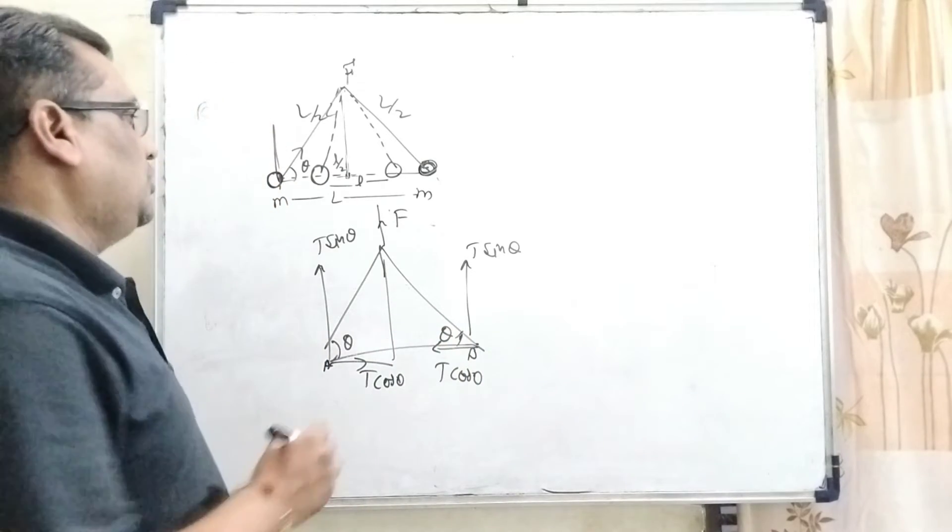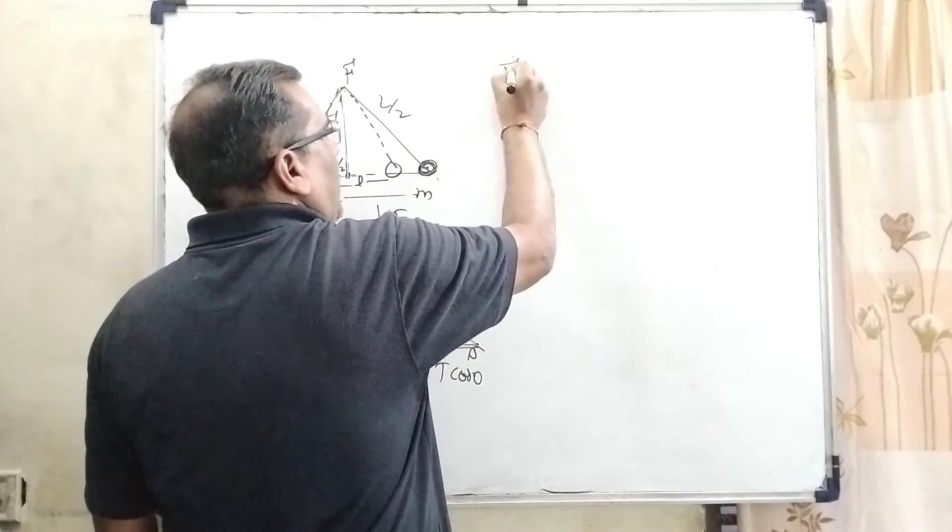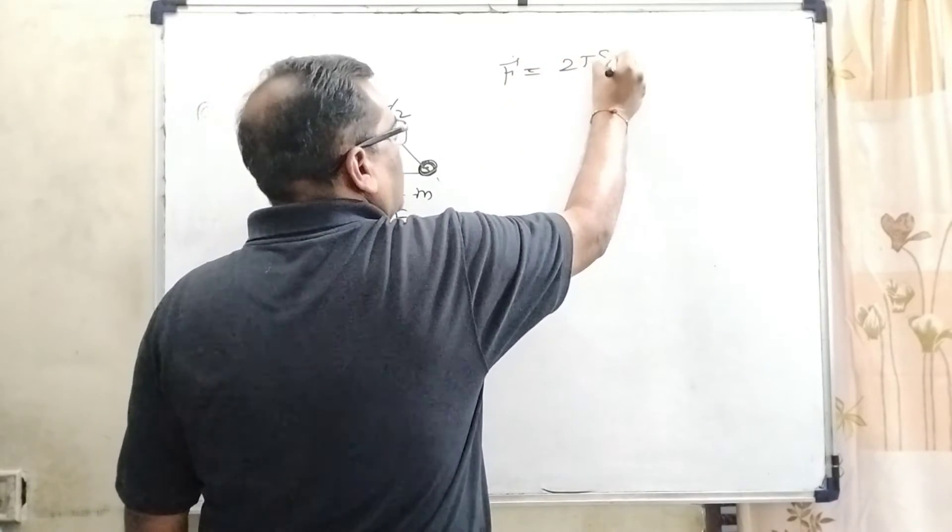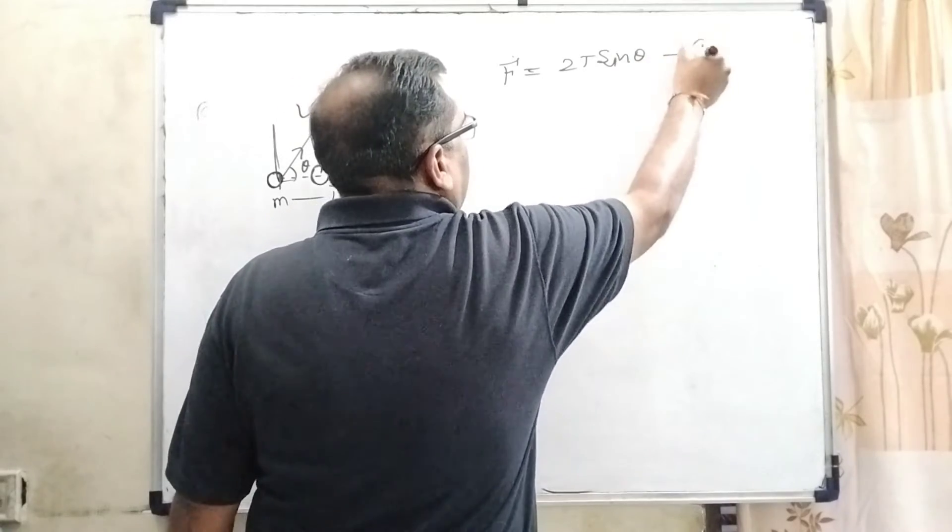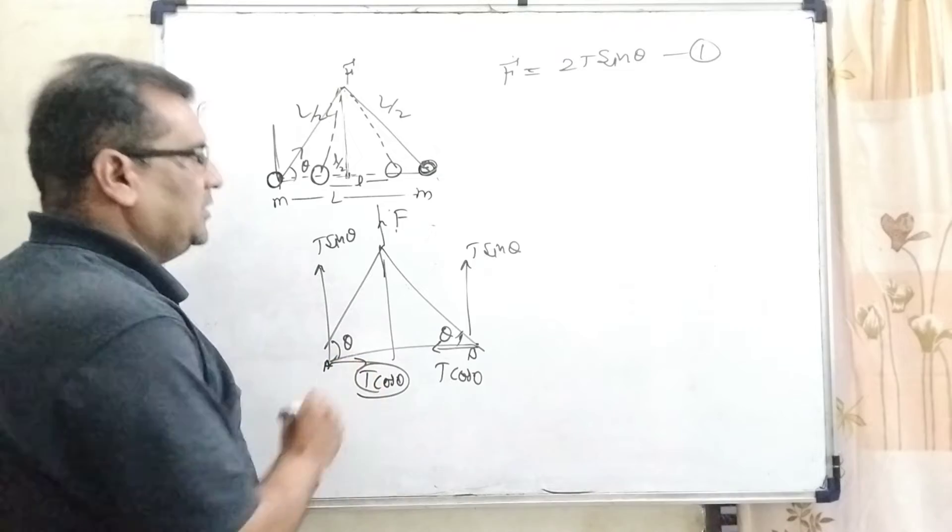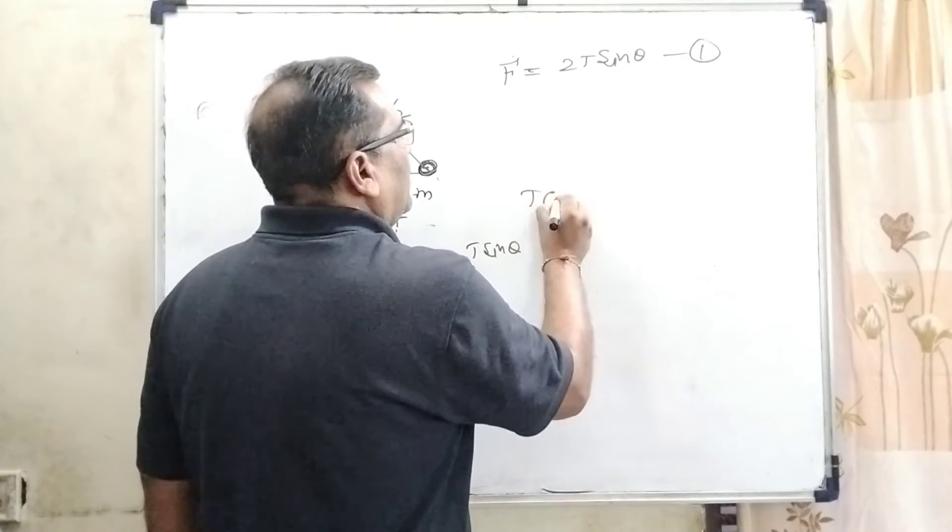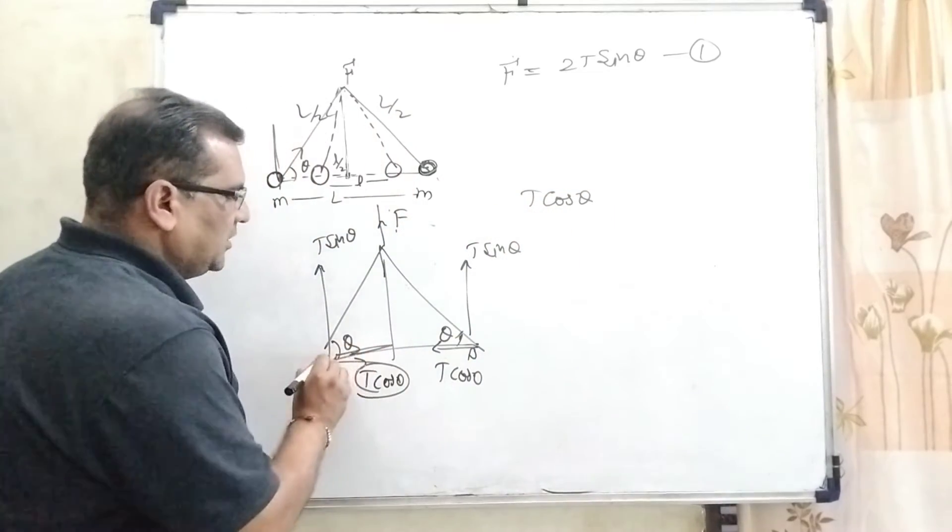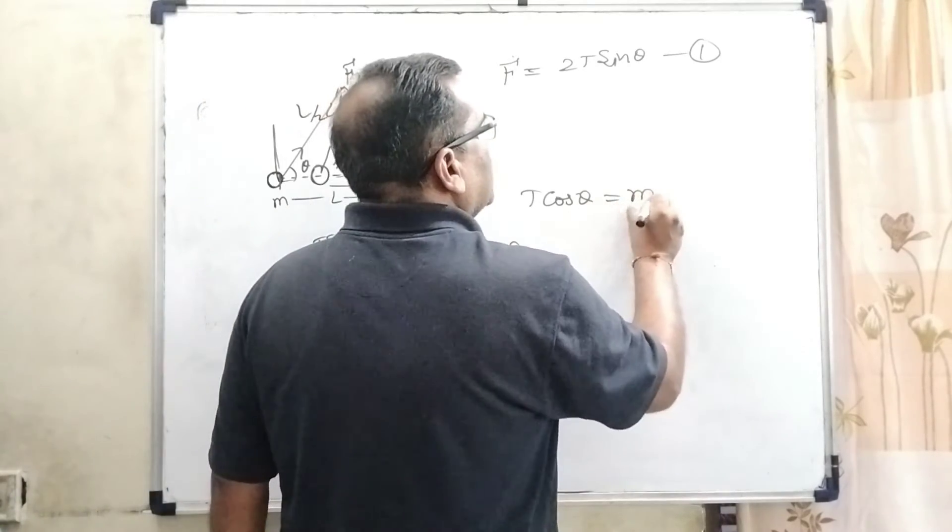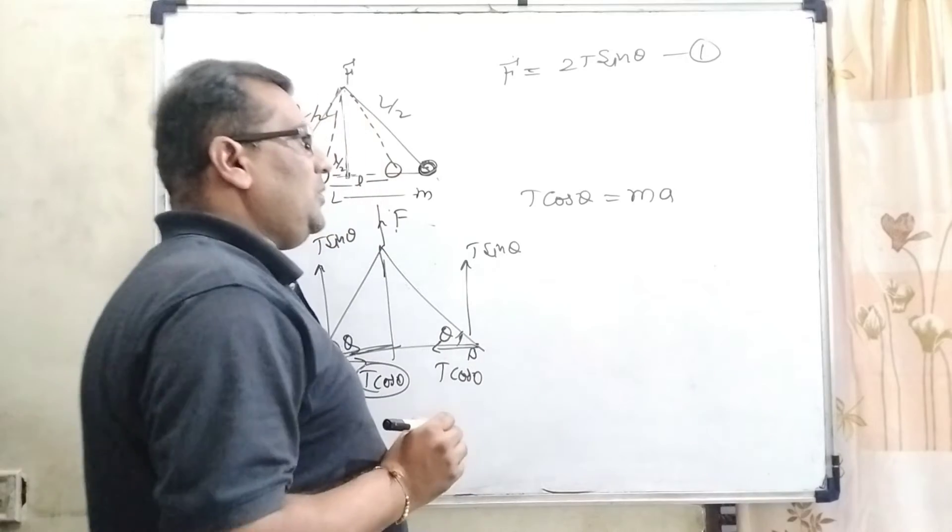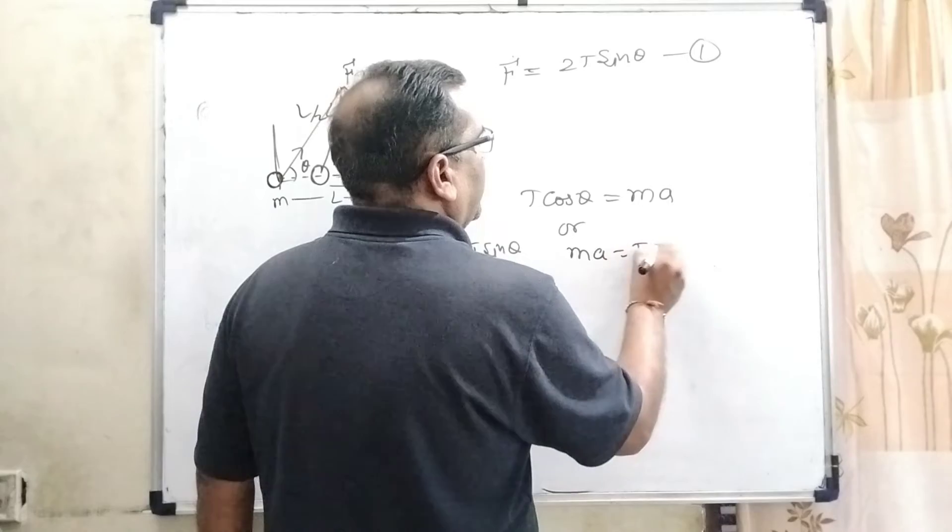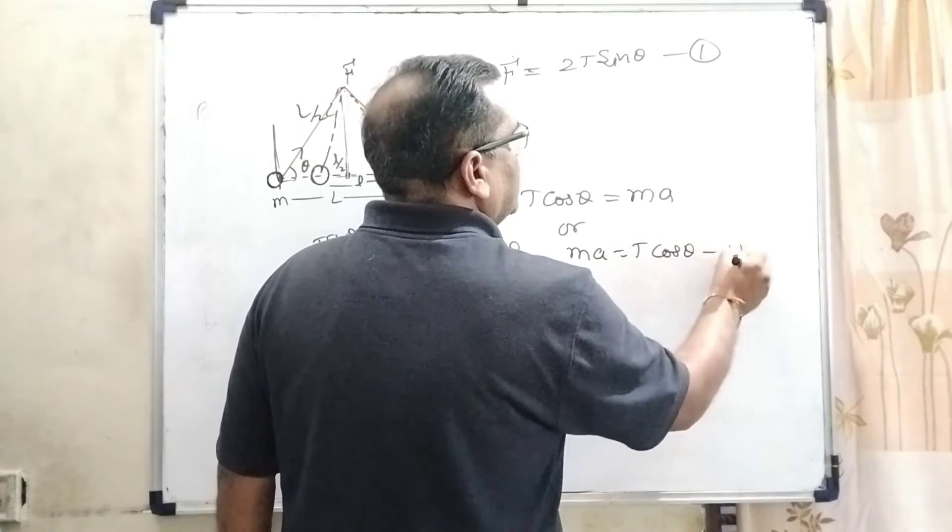Is it clear now? So here, T cos theta in this direction. The tension force applied in this direction is equal to mass into acceleration. So rearranging, M A can be written as T cos theta. This is the second equation.